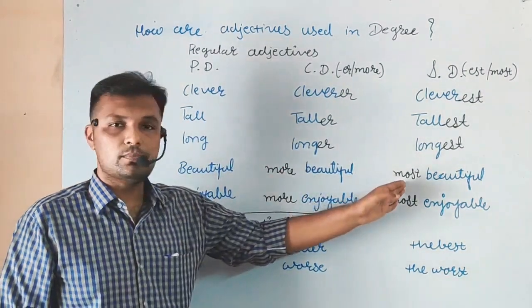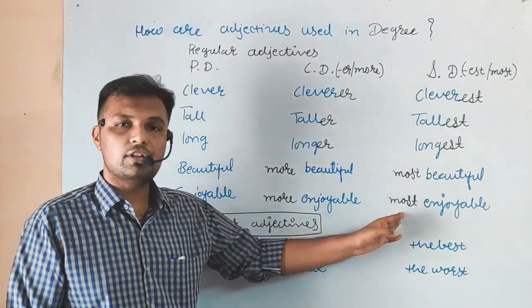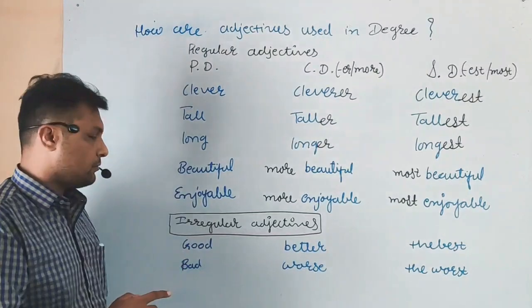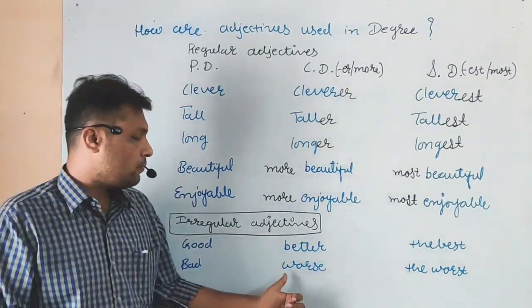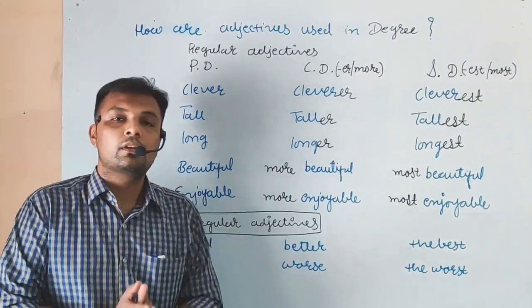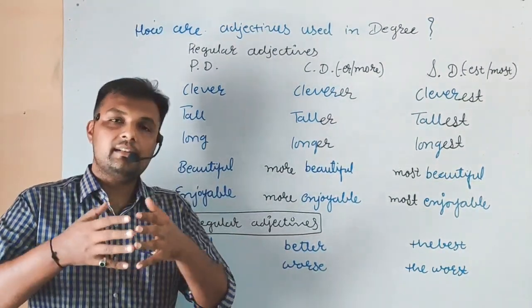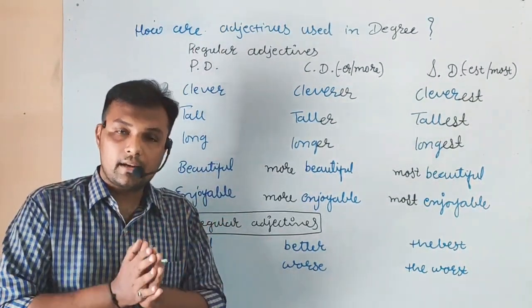Now let's see irregular adjectives: Good, Better, Best. Bad, Worse, Worst. So please share, like, and subscribe to my channel and social media platforms.